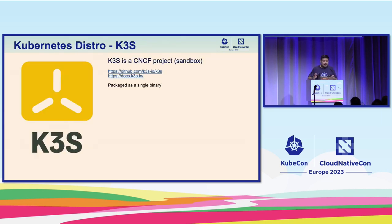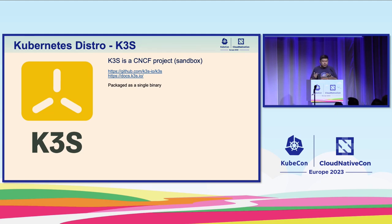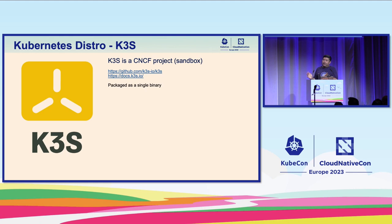First, we're going to take a look at the Kubernetes distro. K3S is a CNCF project in the sandbox maturity level. It was donated by Rancher Labs, accepted in 2020. There are other edge flavors of Kubernetes as well — it's not just K3S. There's KubeEdge and MicroK8s. But for this talk, since K3S is also a CNCF project, we're going to focus on it.